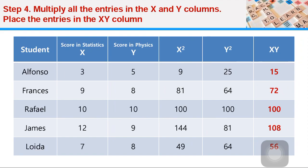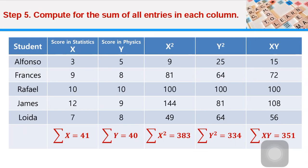Now, the entries in our table are complete. Let's go to step five. You compute for the sum of all entries in each column, and we name them the summation, and you use the variable for the column.